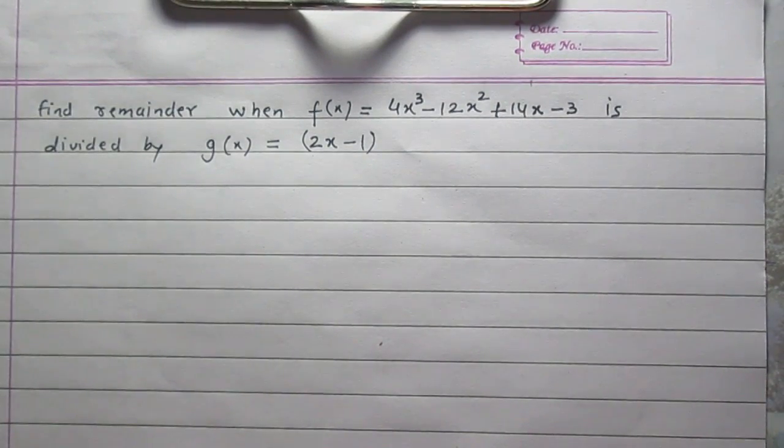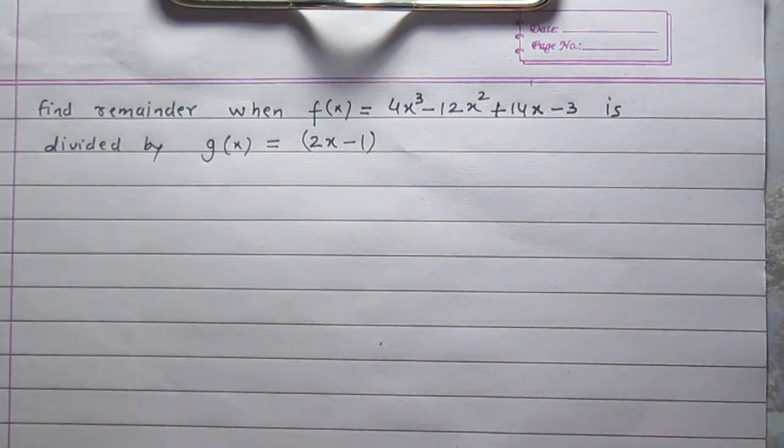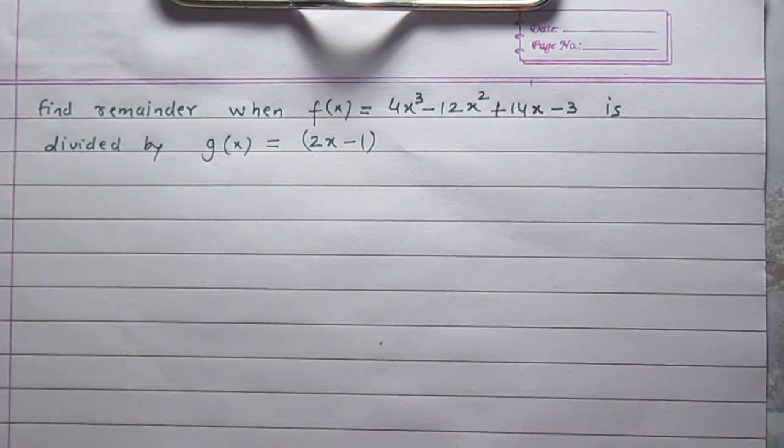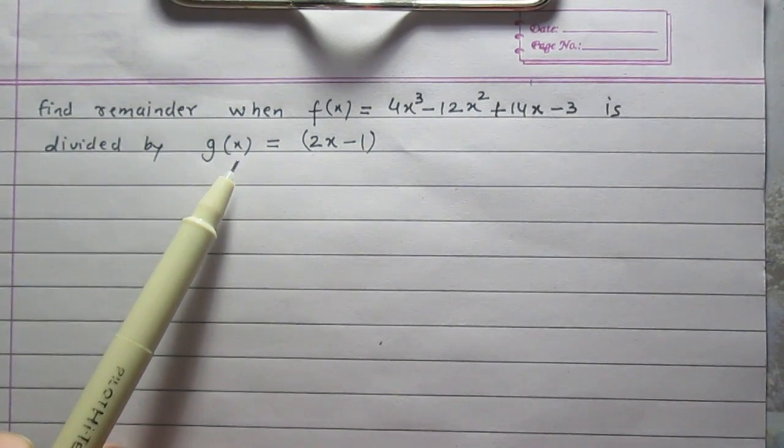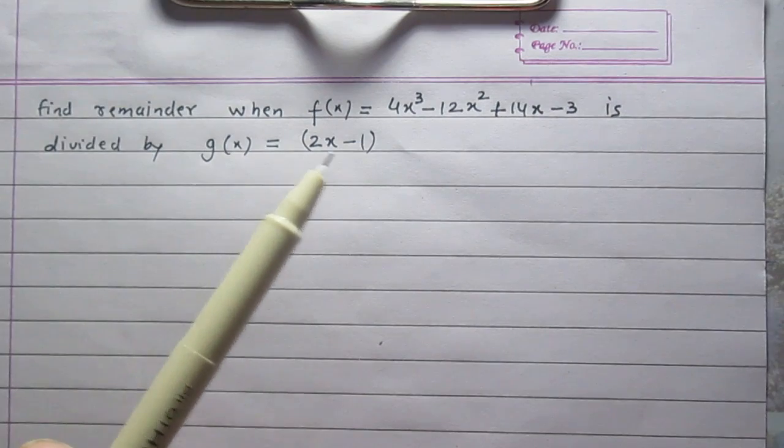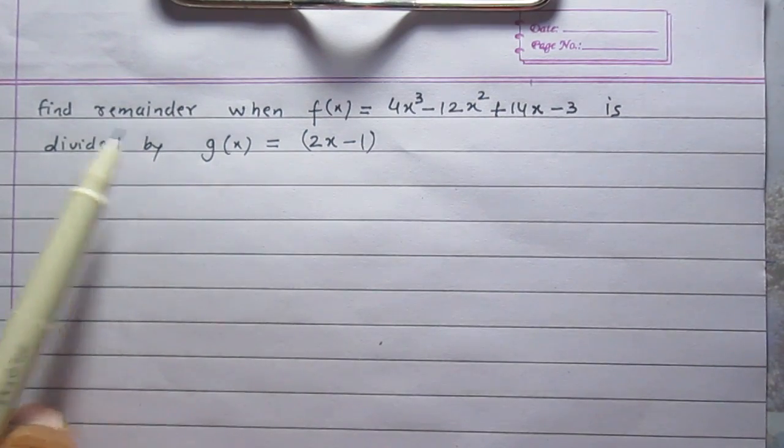Find remainder when f(x) which is equal to 4x³ - 12x² + 14x - 3 is divided by g(x) = 2x - 1. In this question we are given that f(x) is divided by g(x) and without doing the actual division we are to find the remainder.